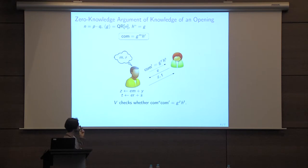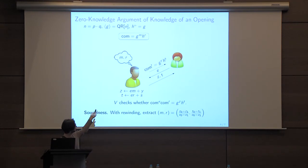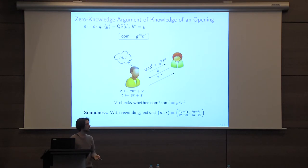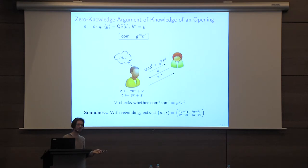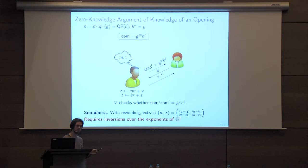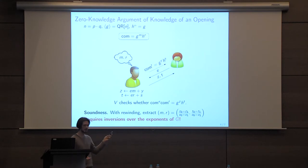How do we usually prove the soundness — the knowledge extraction — of this protocol? The standard method is: if the verifier is interacting with a malicious prover, he can extract a valid witness using rewinding. By rewinding, the last two flows are repeated twice to cancel the randomness of the first flow. Doing so, we can compute M and R — but here there is an issue: we cannot compute inversions, because the exponents V, T, E live in a group of unknown order. So it is infeasible to extract the witness directly, and we'll have to provide a refined argument.